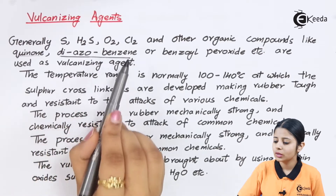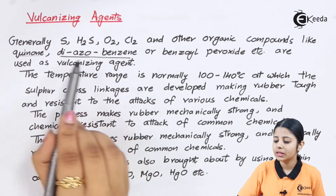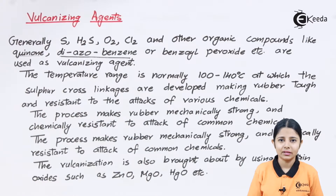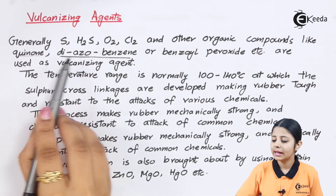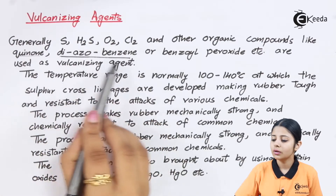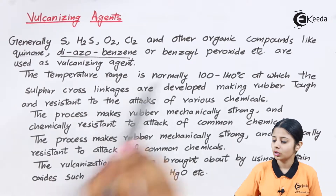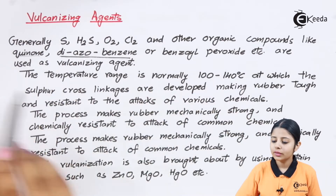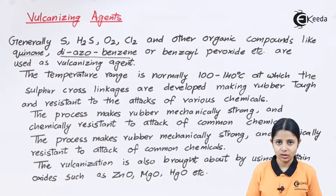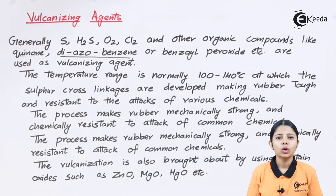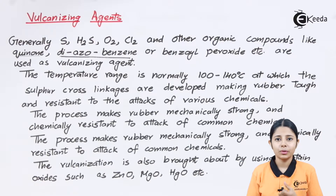We also have some complex organic compounds. The azo group is N double bond N — nitrogen with a double bond. Diazobenzene combines the diazo group with a benzene ring, making it an organic vulcanizing agent. Benzoyl peroxide is another example. All of these are used as vulcanizing agents depending on what kind and quality of rubber we want.